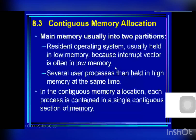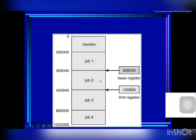In contiguous memory allocation, each process is contained in a single contiguous section of memory. Each process is located in a contiguous memory section.